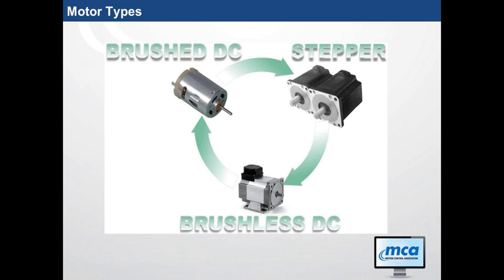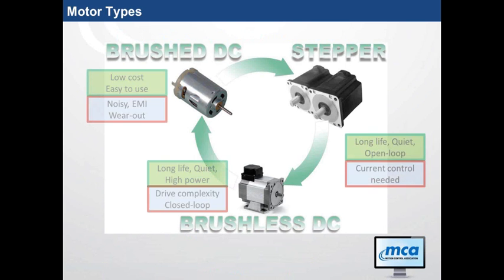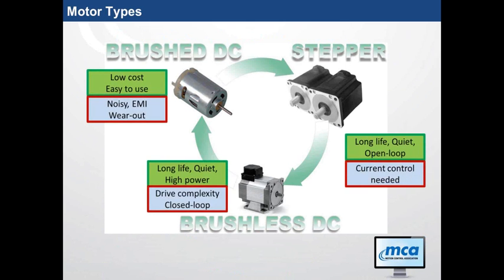These are the types we are most concerned with here at TI: brush DC, stepper, and brushless DC. Starting with the brush DC, it is the lowest cost and the easiest to use. The control of a brush DC can be as simple as hooking up a battery and the motor will spin. It's certainly the lowest cost in terms of electronics and drive, and also the easiest to use.